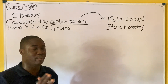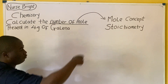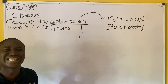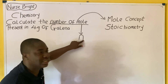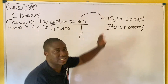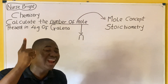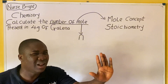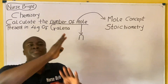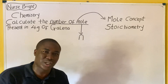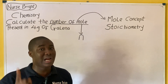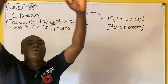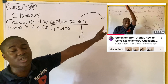Let's get into solving this question on the board. The question says: calculate the number of moles. In chemistry, number of moles is symbolized as N. Number of moles, which is N, has five basic formulas, and I talked about those formulas in that lesson where we solved many practice questions. In the course of solving this question, I'll be using just one out of those five formulas.